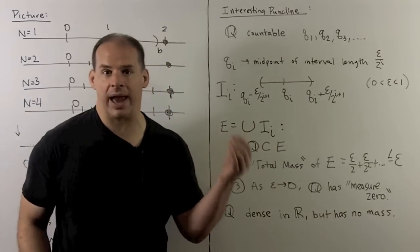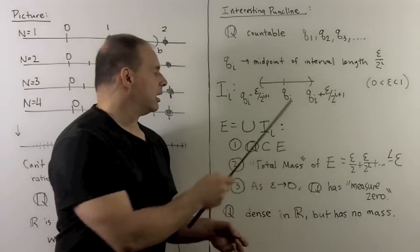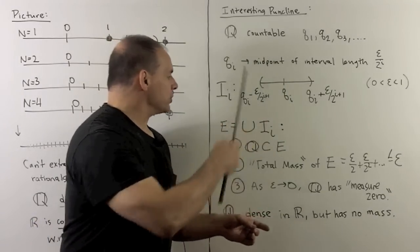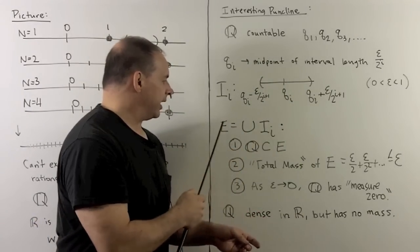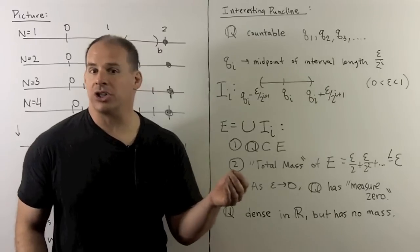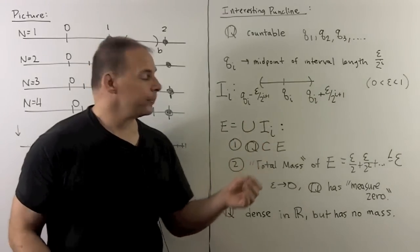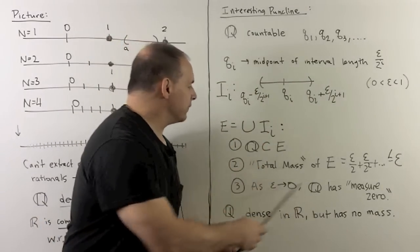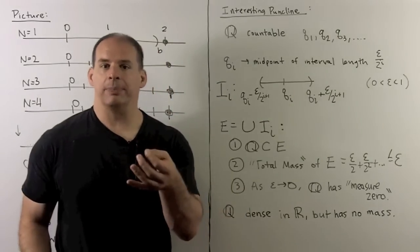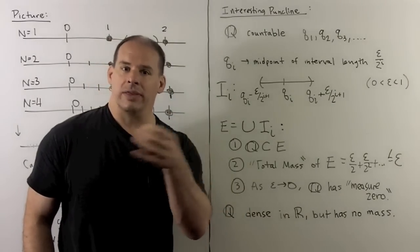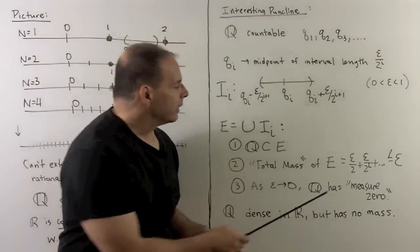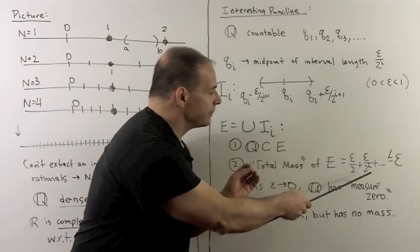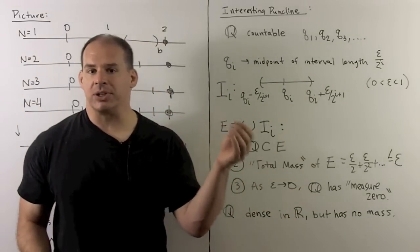Now, we take these intervals, take their union. Okay, I'll call that E. And by construction, the rationals are contained in E. If we take the total mass of E, okay, so we're going to take the sum of all the lengths of the intervals in E. Okay, what's going to give us a geometric series has sum epsilon.